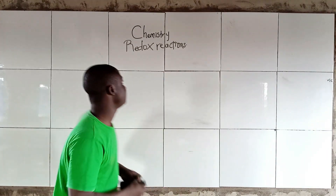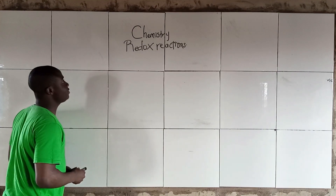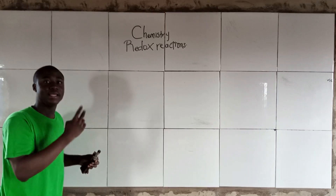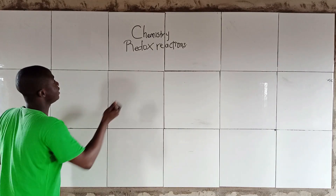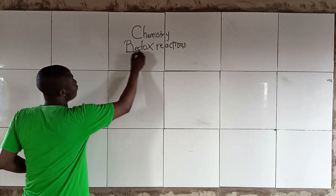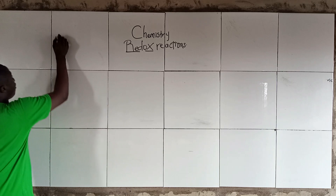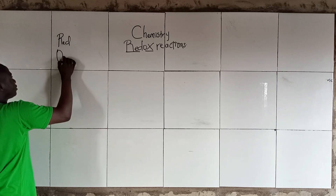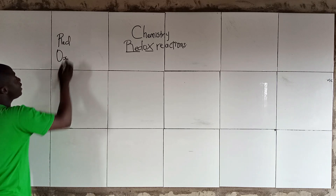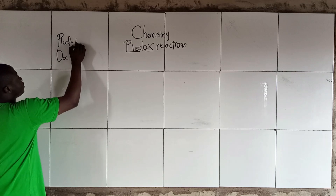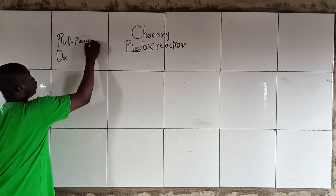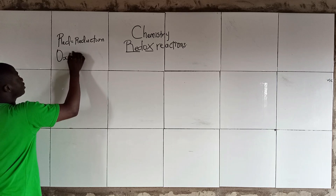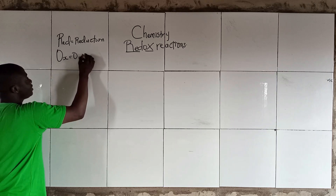Now, what do I mean? You can see from the word redox, it is divided into two other words. We have 'red' and 'ox'. What does 'red' talk about? It talks about reduction. And what does 'ox' talk about? It talks about oxidation.